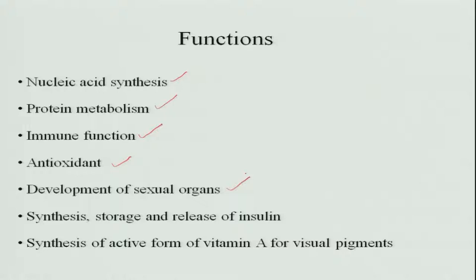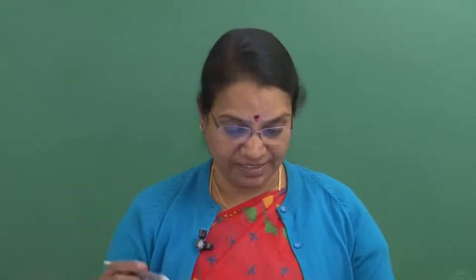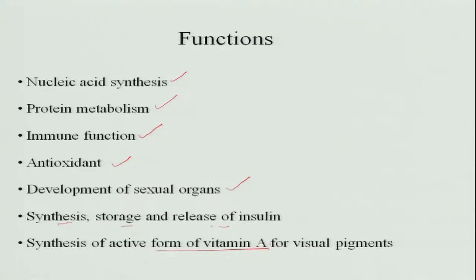Zinc is important for the development of sexual organs during fetal development — it helps in the development of various sex organs in males and females. Zinc is also involved in the synthesis, storage, and release of insulin; it is a part of insulin, and deficiency may cause diabetes mellitus. Additionally, zinc is important for the synthesis of the active form of vitamin A for visual pigment, making it very important for eyesight.